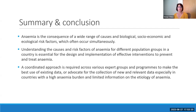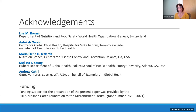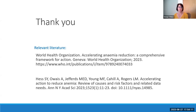In summary, anemia is a consequence of a wide range of biological, socioeconomic, and ecological causes and risk factors which often occur simultaneously. Understanding these for different population groups in a country is essential for the design and implementation of effective interventions to prevent and treat anemia. A coordinated approach is required across various expert groups and programs to make the best use of existing data, and to advocate for the collection of new relevant data, especially in countries with a high burden and limited information on the etiology of anemia. I'd like to thank all the collaborators of that review paper, as well as the funding by the Bill and Melinda Gates Foundation.